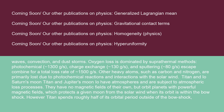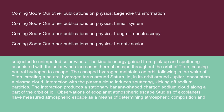Saturn's moon Titan and Jupiter's moon Io have atmospheres and are subject to atmospheric loss processes. They have no magnetic fields of their own, but orbit planets with powerful magnetic fields, which protects a given moon from the solar wind when its orbit is within the bow shock. However, Titan spends roughly half of its orbital period outside of the bow shock, subjected to unimpeded solar winds. The kinetic energy gained from pickup and sputtering associated with the solar winds increases thermal escape throughout the orbit of Titan, causing neutral hydrogen to escape. The escaping hydrogen maintains an orbit following in the wake of Titan, creating a neutral hydrogen torus around Saturn. Io, in its orbit around Jupiter, encounters a plasma cloud. Interaction with the plasma cloud induces sputtering, kicking off sodium particles, producing a stationary banana-shaped charged sodium cloud along a part of the orbit of Io.